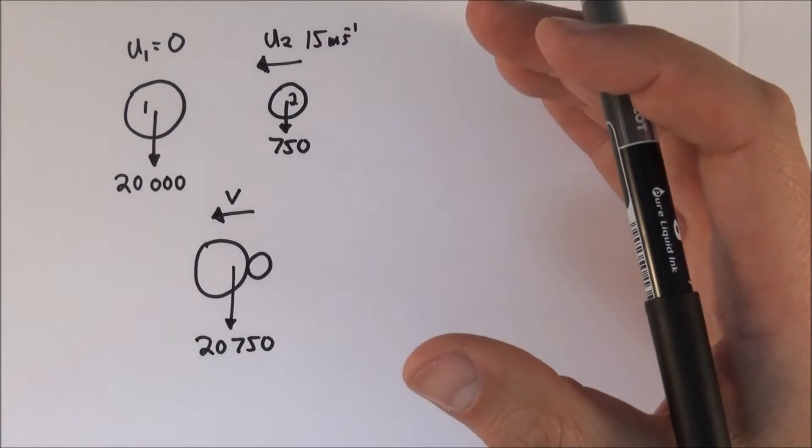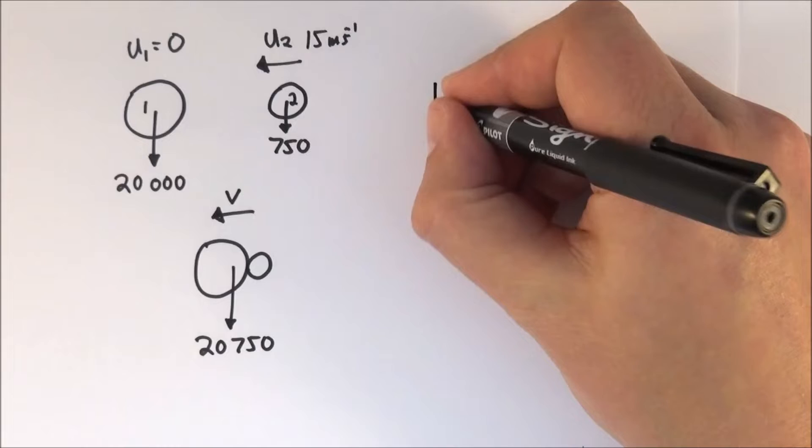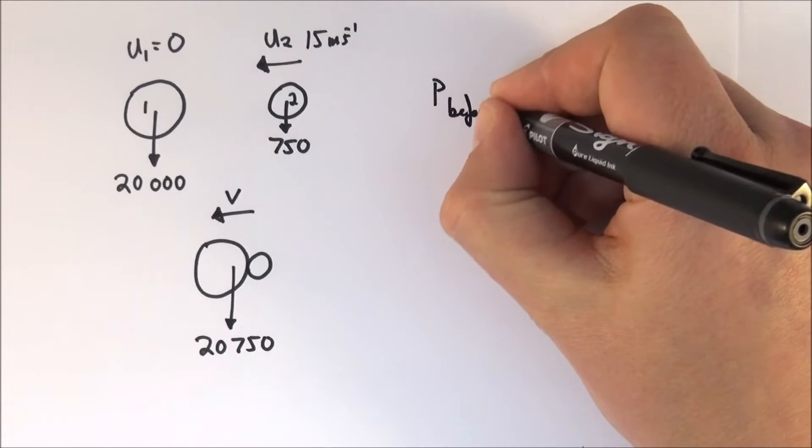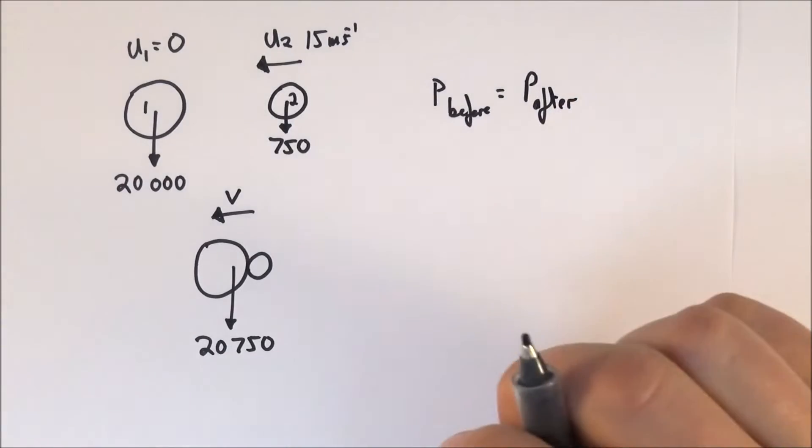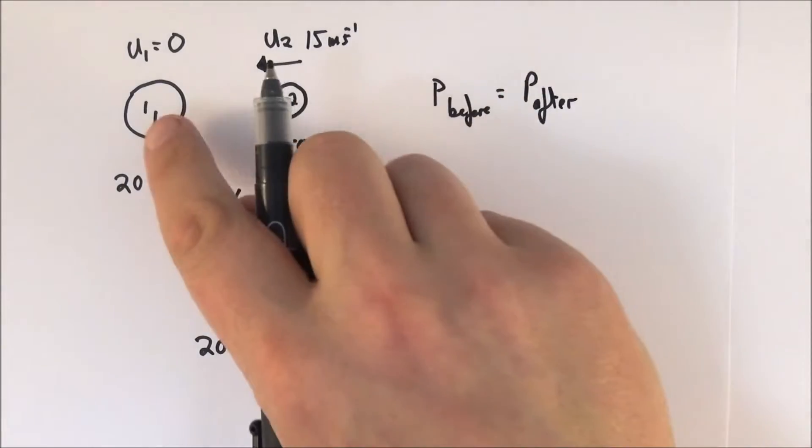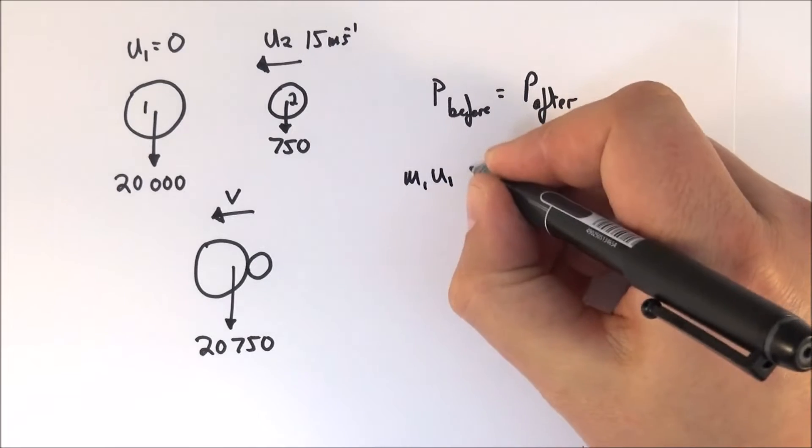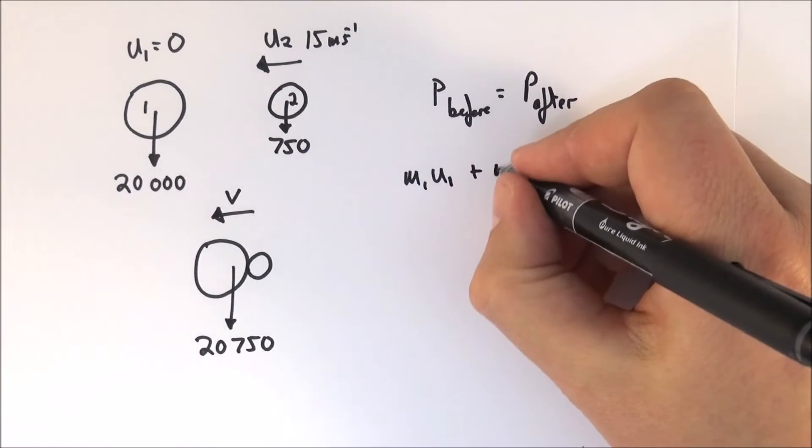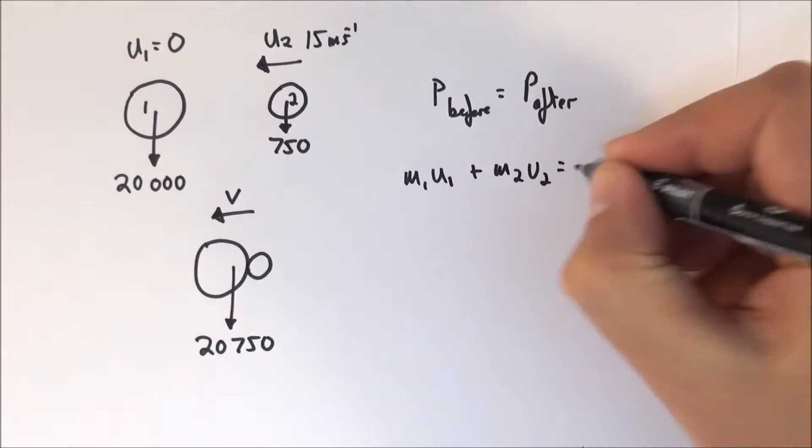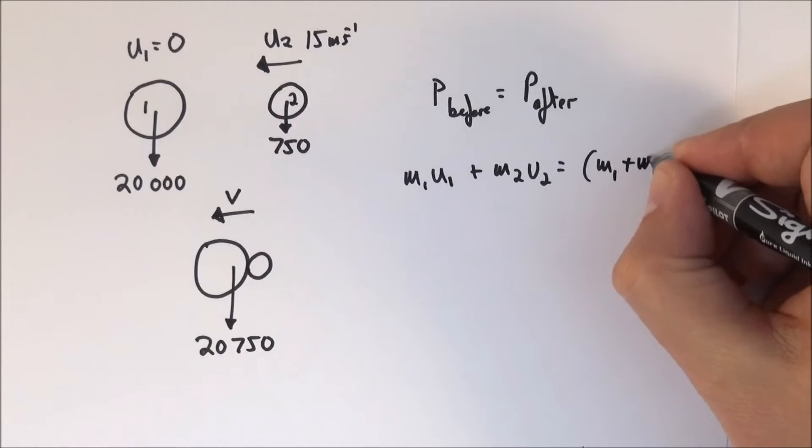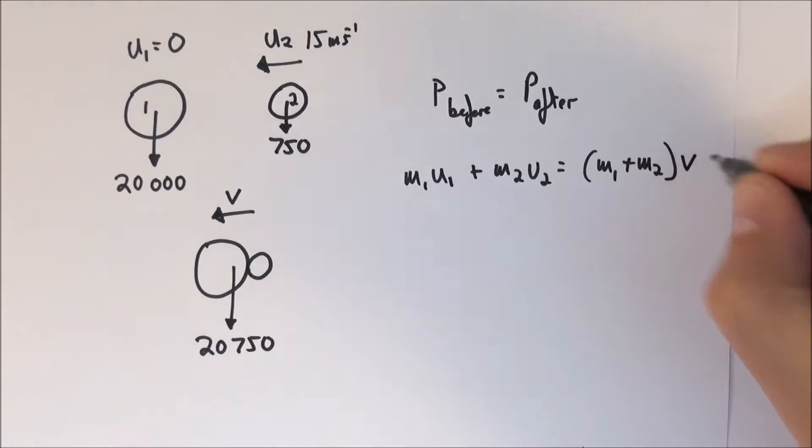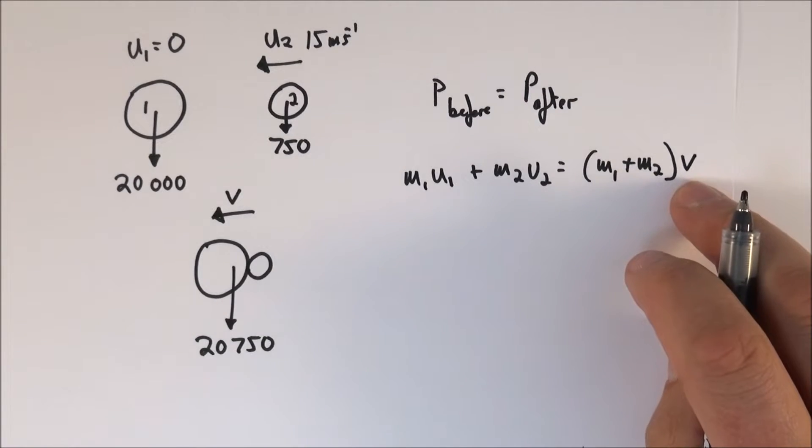Provided no external forces act on the system, momentum before is equal to momentum afterwards, so momentum is conserved. The momentum before is M1U1 plus M2U2, and that's going to be equal to their final momentum which is M1 plus M2 multiplied by V, their combined velocity.